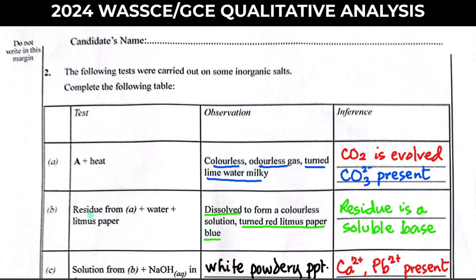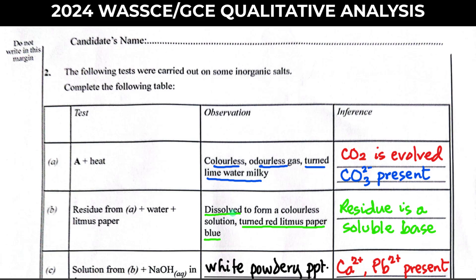The next test: residue from A + water + litmus paper. The residue dissolved to form a colorless solution which turned red litmus paper blue. For it to dissolve means the residue is soluble, and turning red litmus blue means it is a base. So the inference is that the residue is a soluble base.